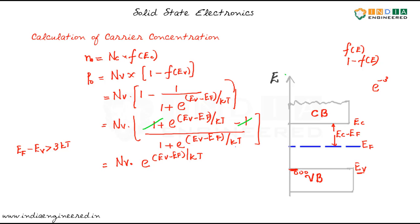By neglecting that term, we will write it as Nv into e power, we'll take minus common from there, that is Ef minus Ev by kt.